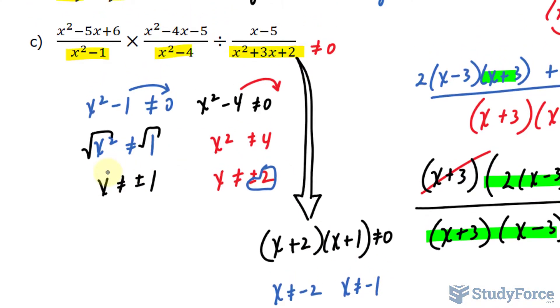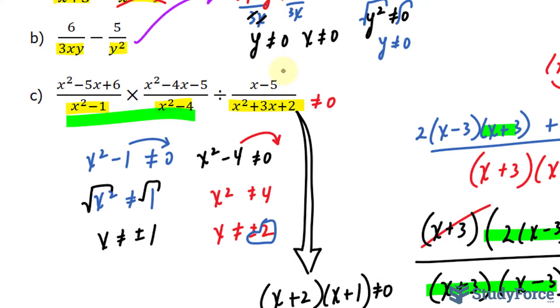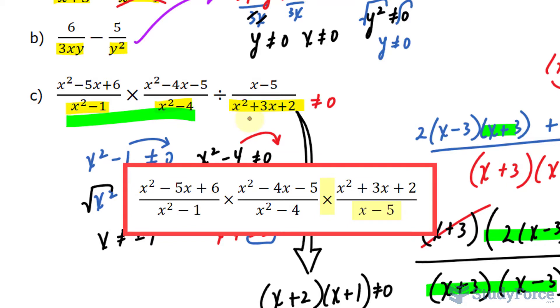Now, if you simplify this expression using BEDMAS, so multiplying these two first and then taking that product and dividing it by that, you might find even more restrictions. In fact, once you do multiply these and then divide by this rational polynomial, you will have to reciprocate that rational polynomial, meaning that this will end up becoming your denominator and that will end up becoming your numerator.